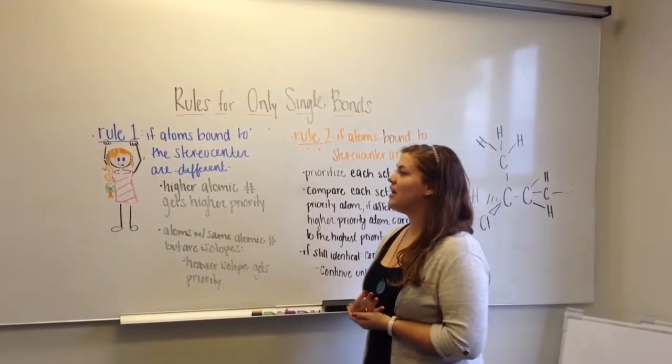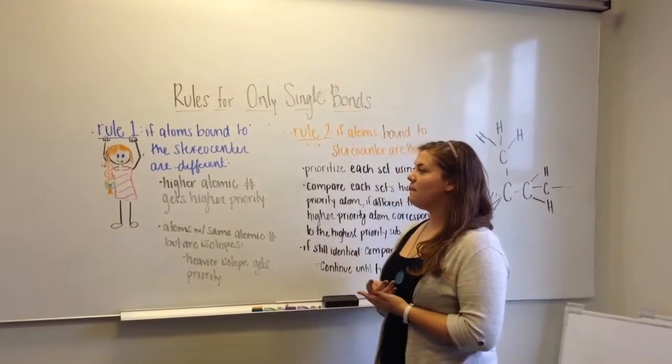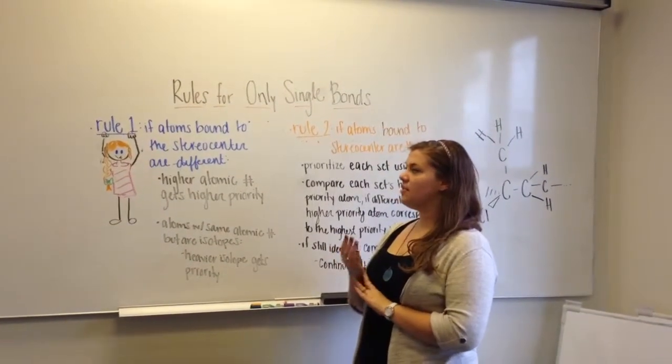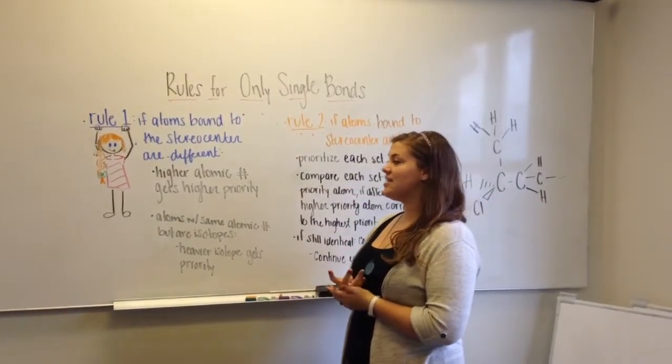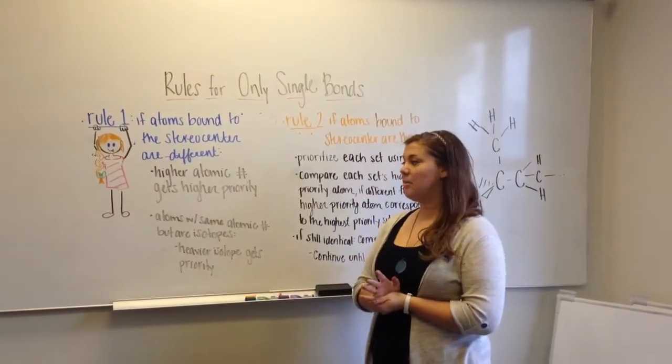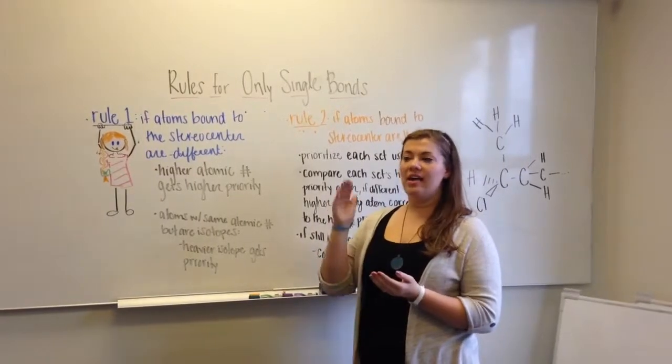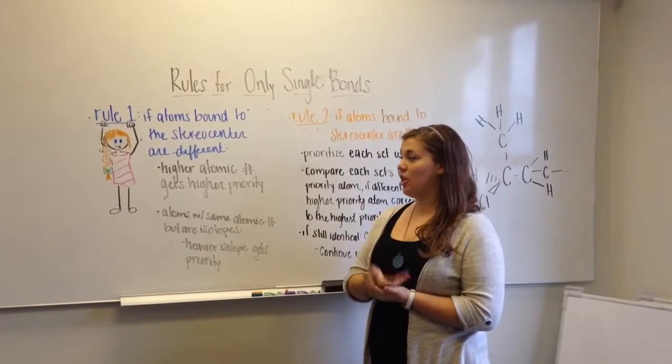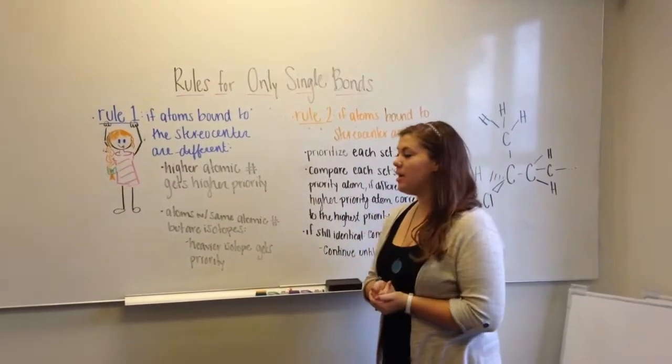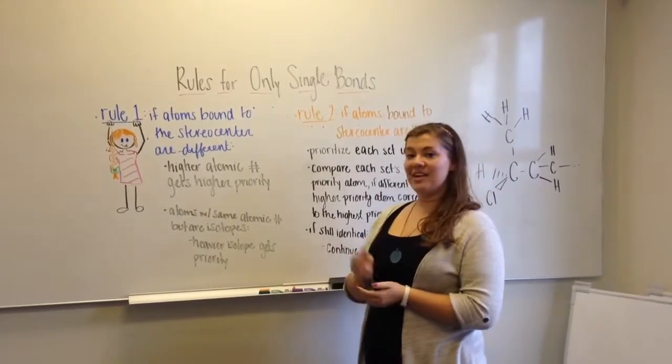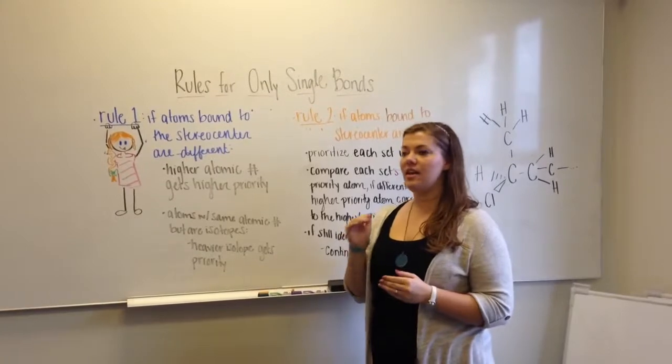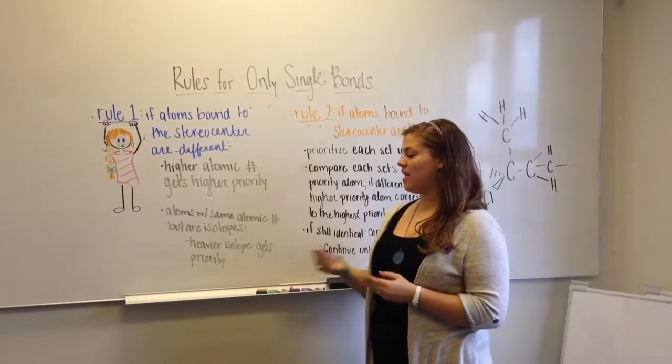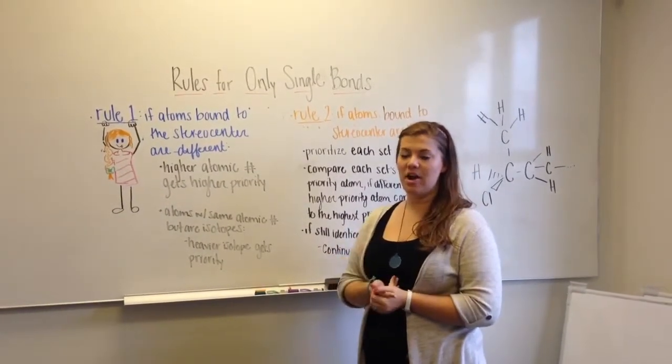We're going to start with the first rule. When you're looking at a stereo center that has atoms that are all bound to it that are different, the atom with the highest atomic number gets the highest priority and it goes down until the atom with the lowest atomic number gets the lowest priority. If you're looking at atoms that have the same atomic number but are isotopes, the isotope with the higher mass gets the higher priority.